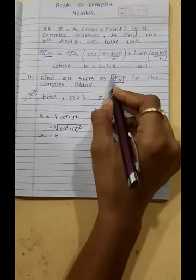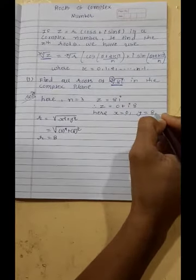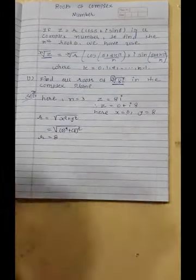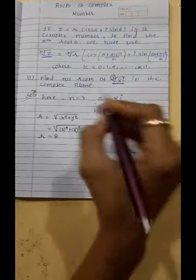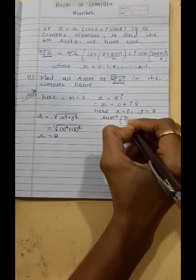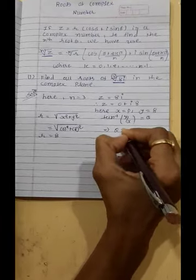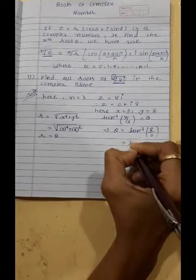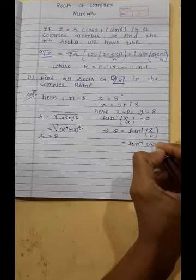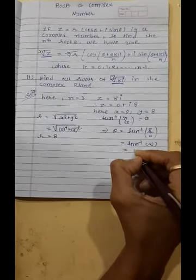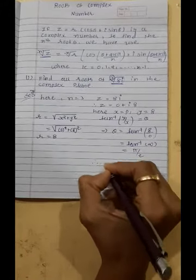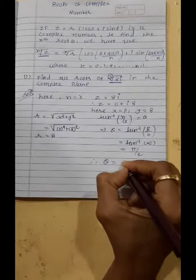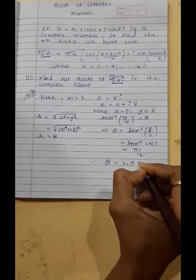Now we find the value of θ. Here x is equal to 0 and y is equal to 8, which means our number lies in the first quadrant on the y-axis. Since tan inverse(y/x) equals θ, we get θ equals tan inverse(8/0). Tan inverse of 8/0 is infinity, and tan inverse of infinity is π/2. Therefore θ equals π/2, which in decimal is 1.5708.